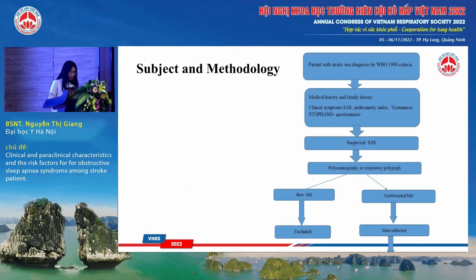This is a photograph of how I collected my data. Patients with stroke were diagnosed by WHO criteria, and we gathered medical history, family history, clinical symptoms, and anthropometry index using a Vietnamese sleep questionnaire. Patients suspected of having sleep apnea syndrome were candidates for polysomnography or respiratory polygraphy to confirm the diagnosis, after which data were collected for the research.